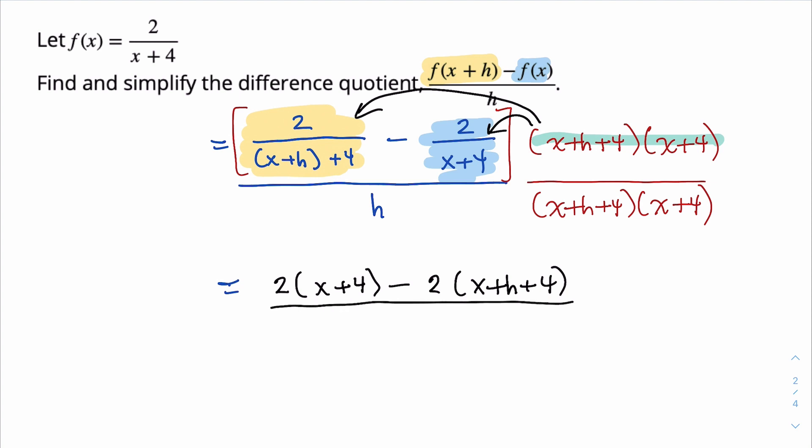Now, it might be tempting to multiply out the denominator, but we're not going to, because remember that the goal is essentially to get that single h to disappear, to cancel out. So I'm going to leave it in factored form so that I can easily see if that happens.